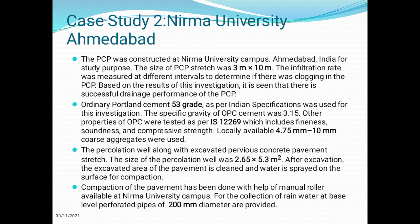Locally available 4.75 mm to 10 mm coarse aggregates were used. A percolation well along with the excavated pervious concrete pavement stretch was constructed, with the percolation well size being 2.65 by 5.3 meter square. After excavation, the excavated area of the pavement was cleaned and water was sprayed on the surface for compaction. Compaction was done with the help of a manual roller available at Nirma University campus. For collection of rainwater at base level, perforated pipes of 200 mm diameter were provided.